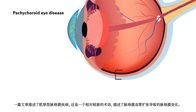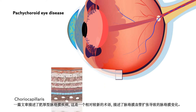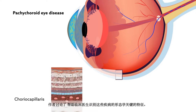One article details pachychoroid eye disease, a relatively new term describing changes in the choriocapillaris resulting from dilated choroidal veins. The authors include a discussion of key morphological features that can help clinicians recognize the condition.